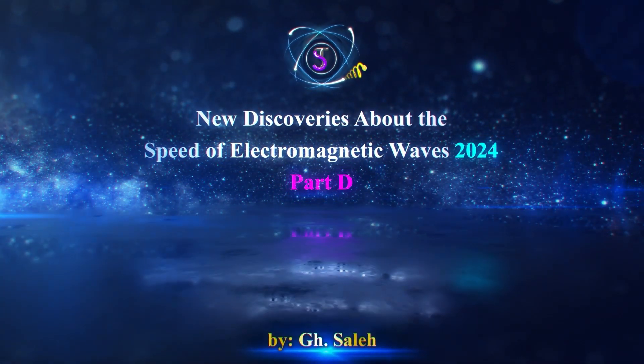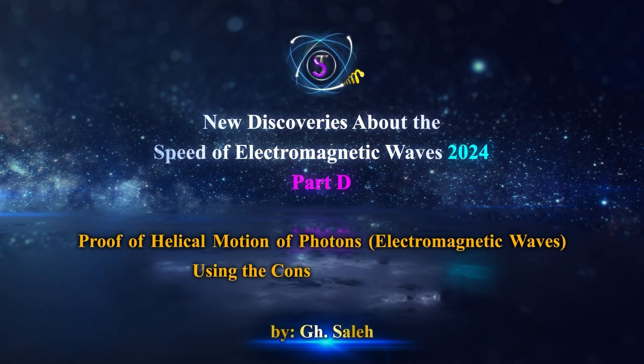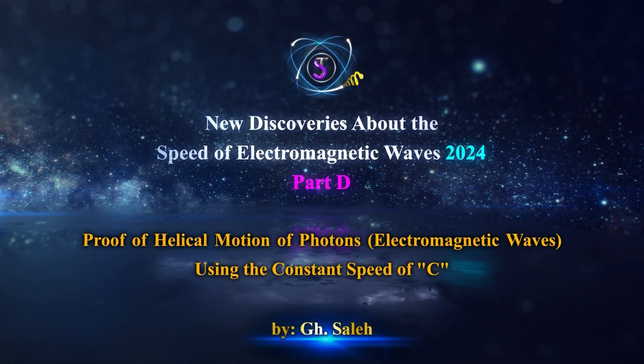New discoveries about the speed of electromagnetic waves, 2024, Part D: Proof of helical motion of photons (electromagnetic waves) using the constant speed of C.